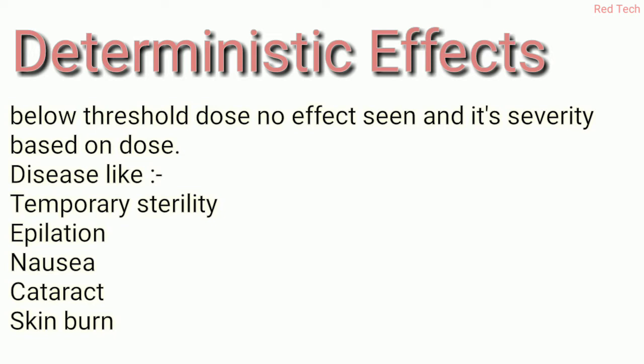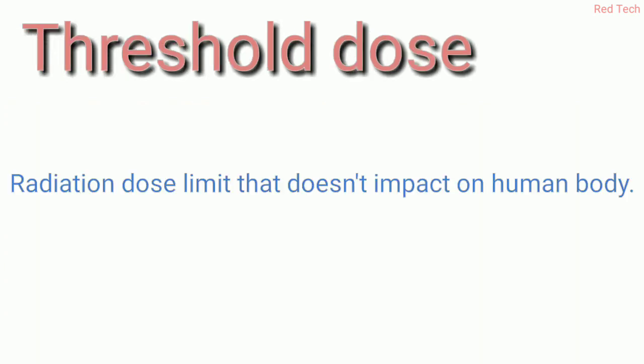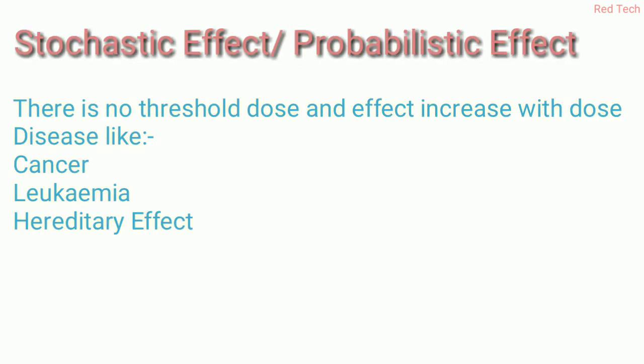Skin burn is seen very quickly, followed by cataract, then nausea, then epilation, and then temporary sterility — this order is based on how much dose is received. The threshold is the radiation dose limit that does not impact the human body; that limit is called the threshold dose. Deterministic effects occur below this threshold.